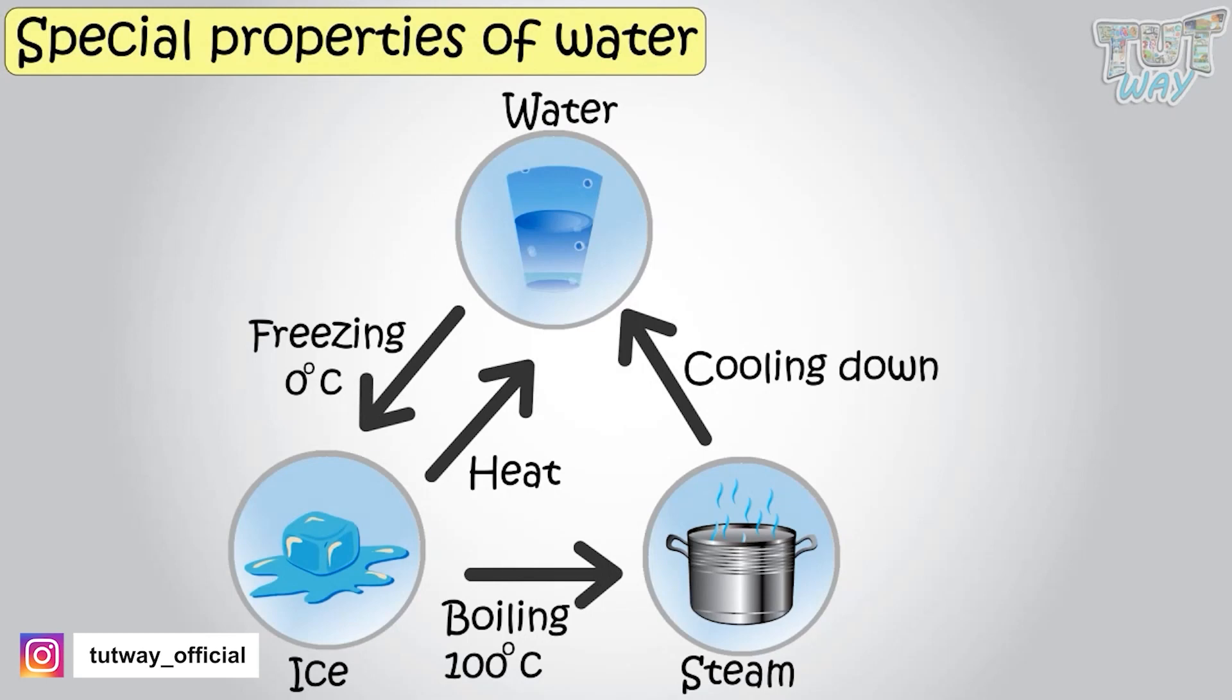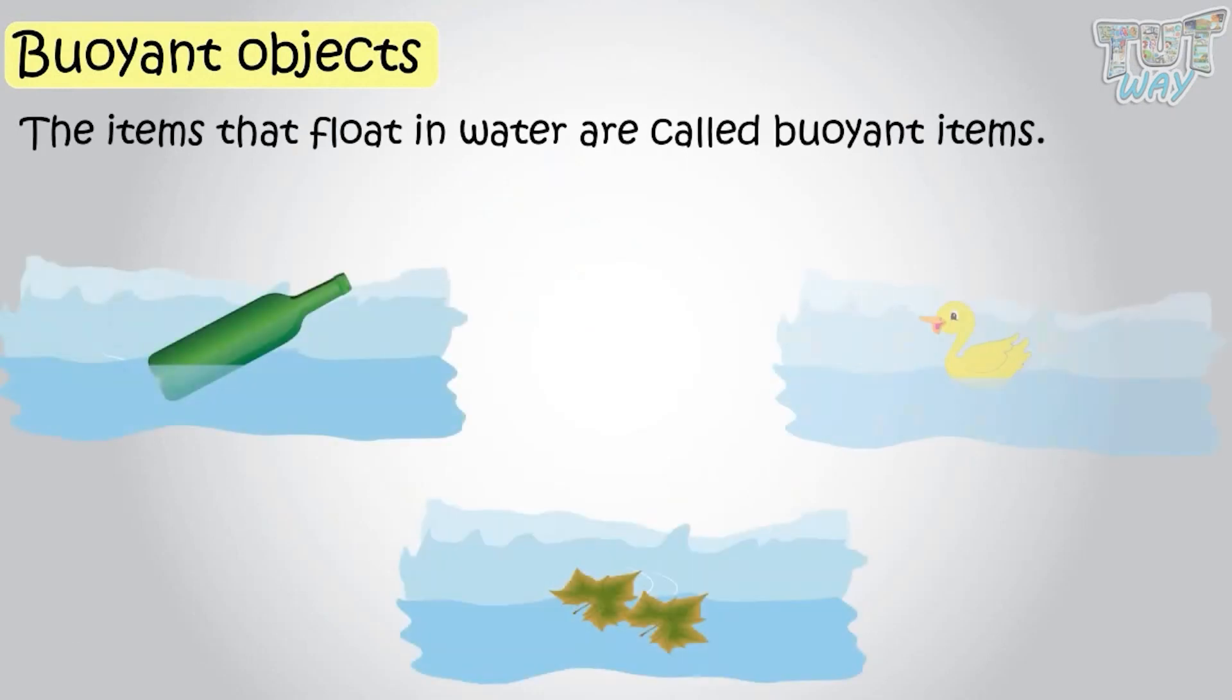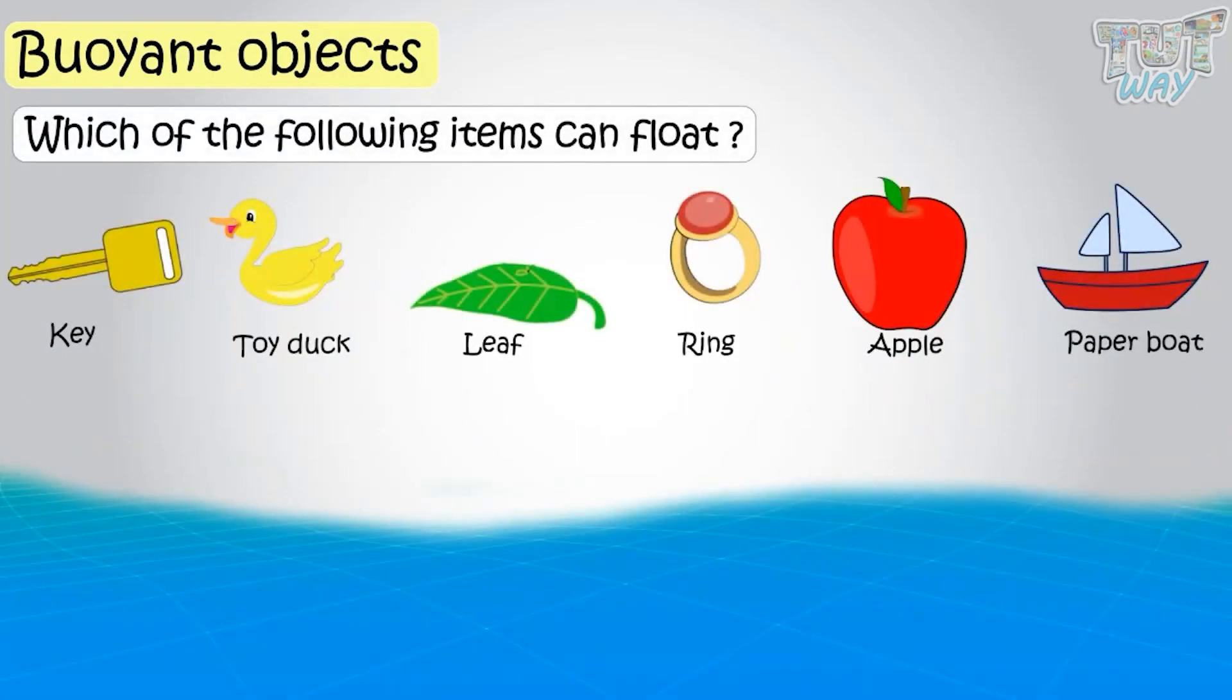Now let's see what are buoyant objects. The items that float in water are called buoyant items. Here are a few things. Let's see which of the following items can float.